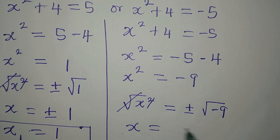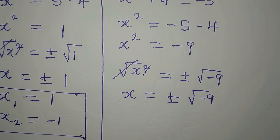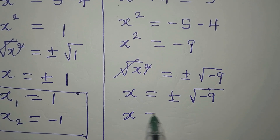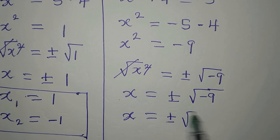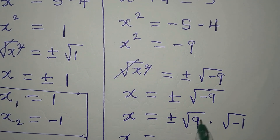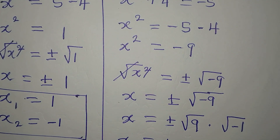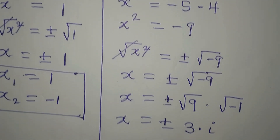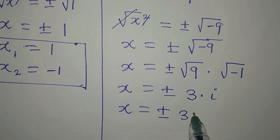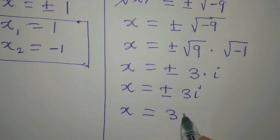We want the complete solution, so x = ±√(-9). We can't directly take the square root of a negative number on a calculator, so we write it as ±√9 × √(-1), which gives ±3i, since √9 = 3 and √(-1) = i.